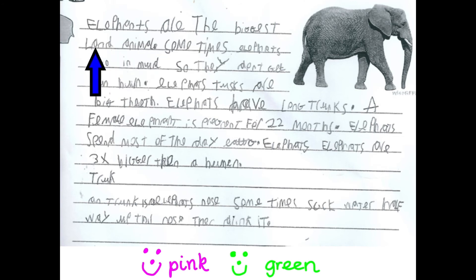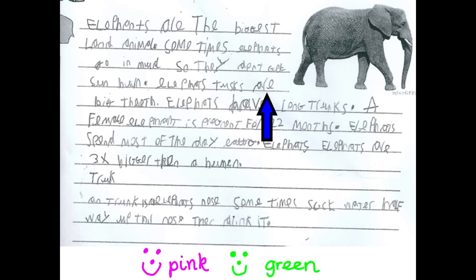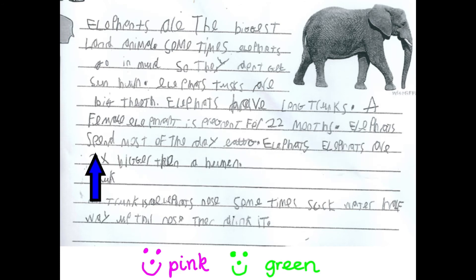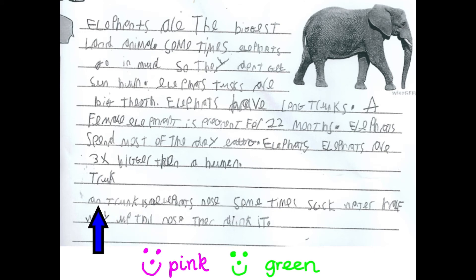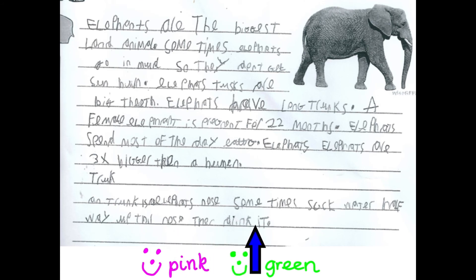Elephants are the biggest land animals. Sometimes elephants go in mud so they don't get sunburn. Elephants' tusks are big teeth. Elephants have long trunks. A female elephant is pregnant for 22 months. Elephants spend most of the day eating. Elephants are three times bigger than a human. An trunk is an elephant's nose. Sometimes suck water halfway up the nose, then drink it. You might have noticed there were a couple of missing words there - we're going to start with the pink.